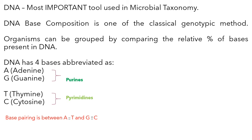DNA is the most important tool used in microbial taxonomy. In genotypic methods you do all DNA related studies. DNA based composition is one of the classical genotypic methods. In polyphasic taxonomy there are two different types of methods used in identification and classification of organisms.